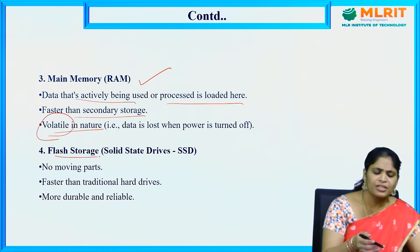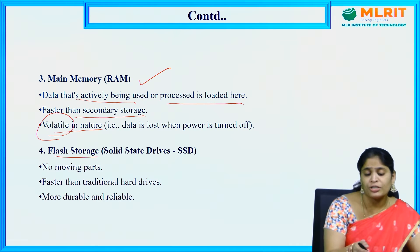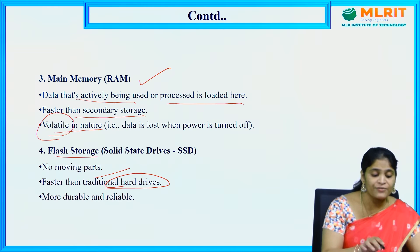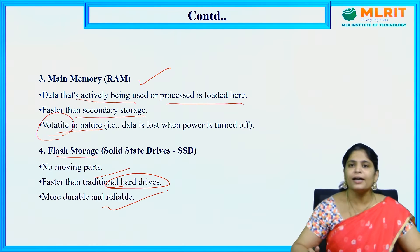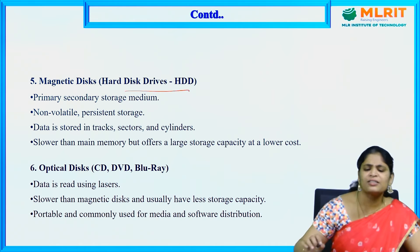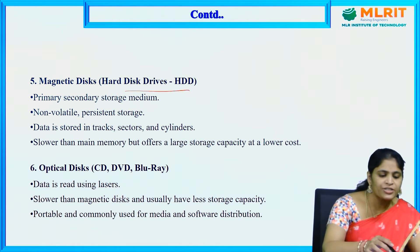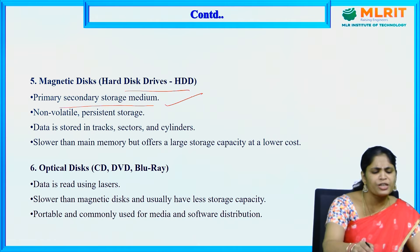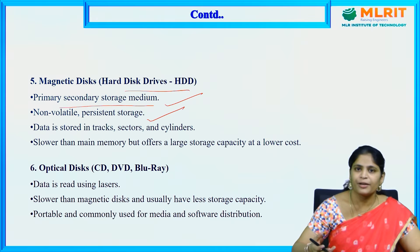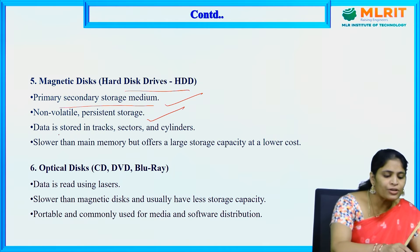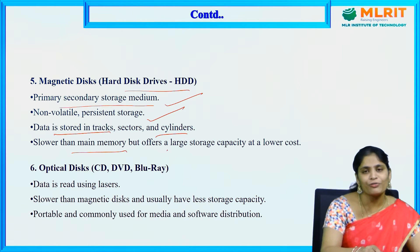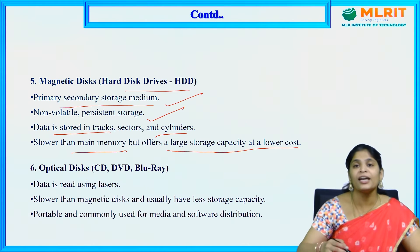Flash storage refers to SSDs (solid state drives) — no moving parts, faster than traditional hard drives, and more durable and reliable. The next level is magnetic disk, that is hard disk drives (HDD), which is the primary secondary storage medium and non-volatile. If power is lost, data is not lost. Data is stored in tracks, sectors, and cylinders — slower than main memory but offers large storage capacity at lower cost.